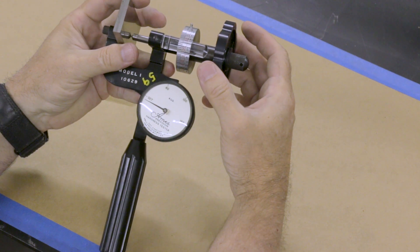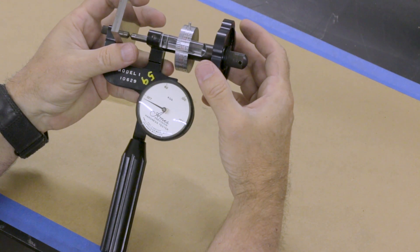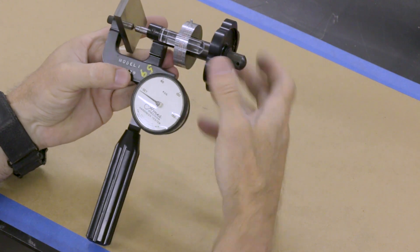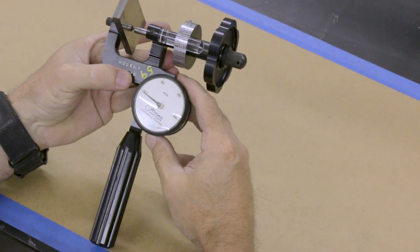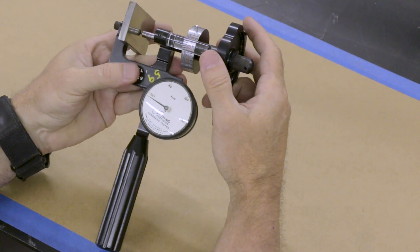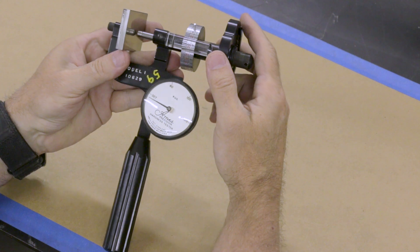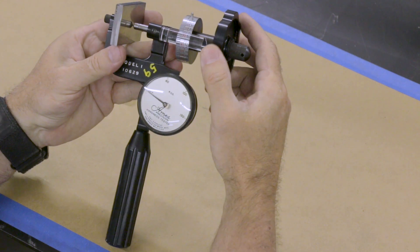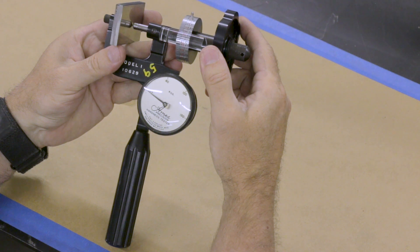And then as soon as I feel that resistance, the needle will start to move. And at that point, so then when that needle starts to move, I will tighten down until this is lined up on the point where it says set.